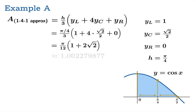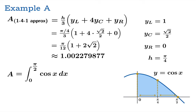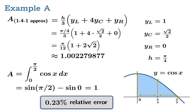Put that into your calculator and you'll find it's approximately 1.00228. The actual area is the integral of cosine from 0 to π/2, which is exactly 1.00. The relative error is 0.23% — a pretty good approximation. What's going on is that the quadratic approximation through the three selected points is a really good fit to the actual graph of cosine, which is why the 1-4-1 approximation does such a good job.